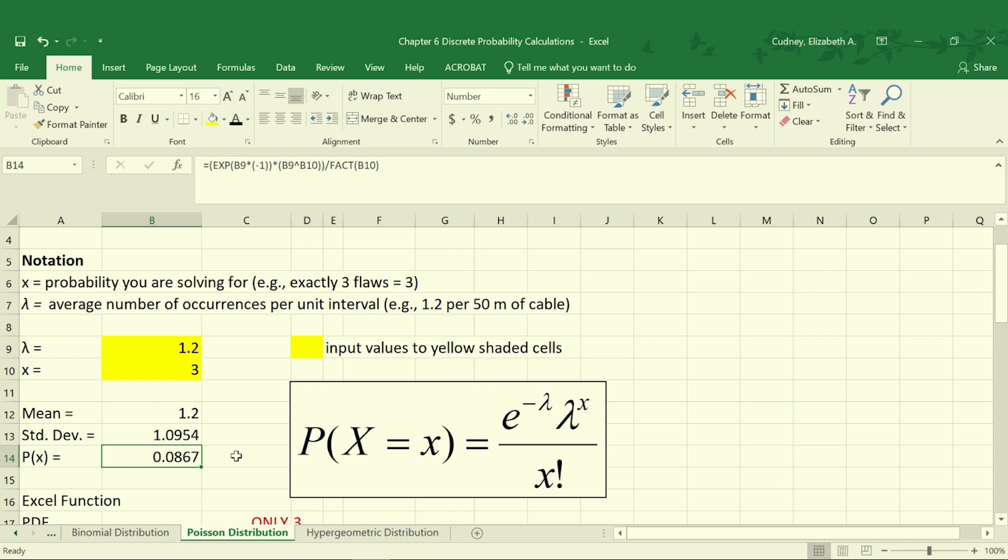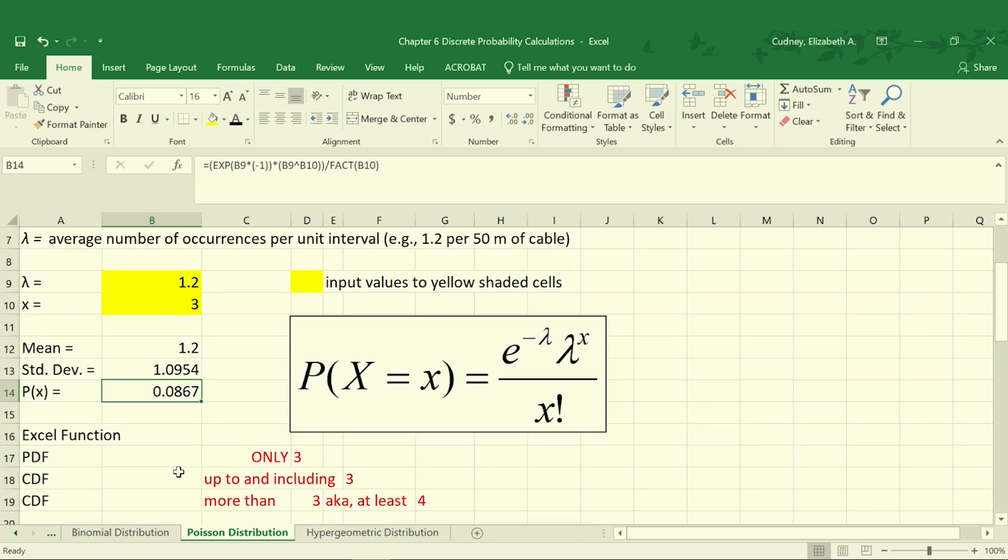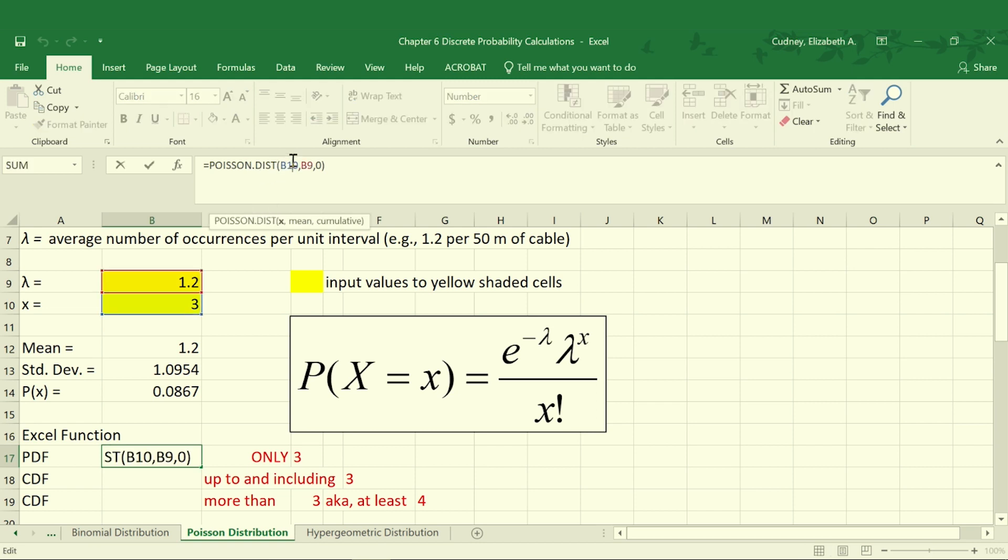We can also calculate this very easily with an Excel function. With our Excel function, we can calculate the PDF and the CDF. The function in Excel is Poisson.dist. And then we're going to take our x value, which in this case is cell B10, and that's the three defects we're trying to understand the probability of occurring. The mean, which is our lambda in cell B9. And we're doing the PDF, so we're going to say false because we're not doing the cumulative. And that gives us the same value of 8.67%.